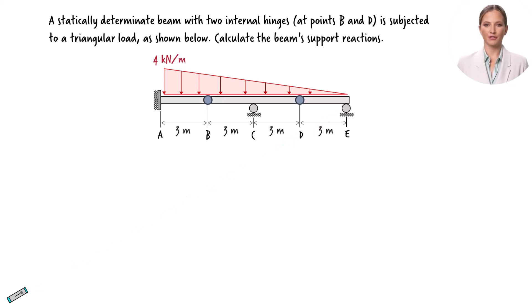Additionally, there are two internal hinges at points B and D, which connect the three beam segments, forming a unified beam structure.